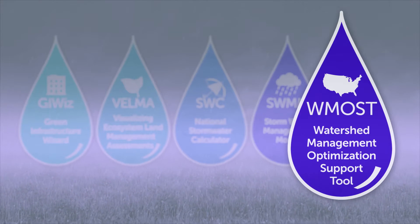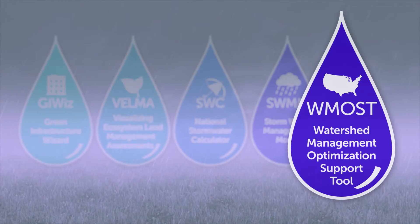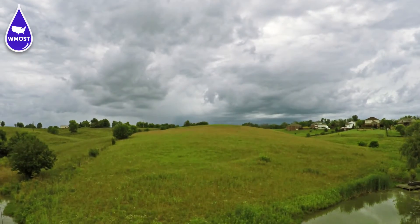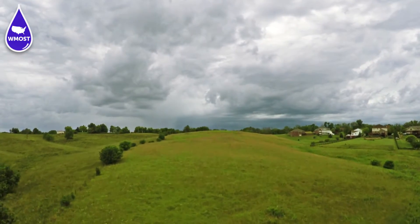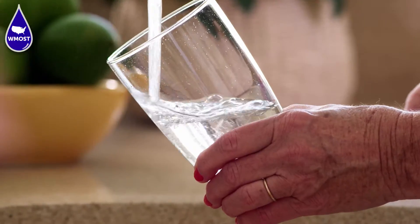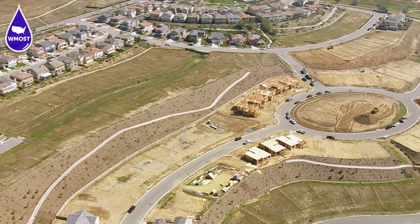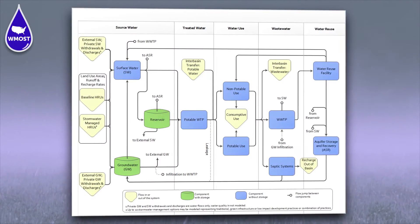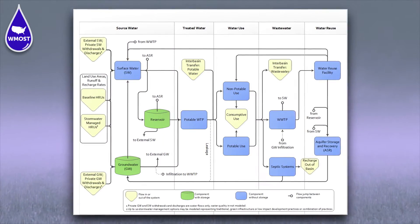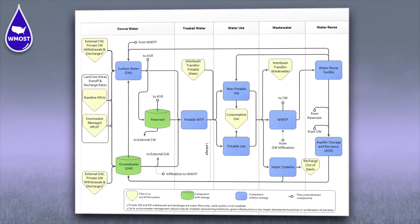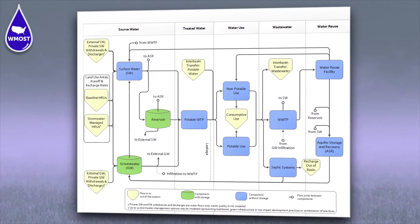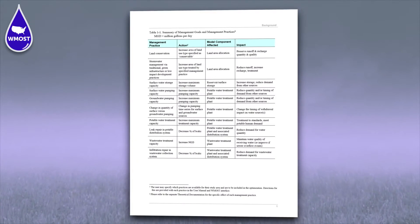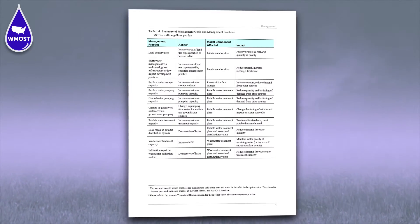The Watershed Management Optimization Support Tool, or WMOST, is a screening model that helps facilitate integrated water management that looks across stormwater, drinking water, wastewater, and land conservation programs. The tool screens water resources management options across a watershed or jurisdiction for cost-effectiveness, as well as environmental and economic sustainability. WMOST helps evaluate green infrastructure as part of the process.